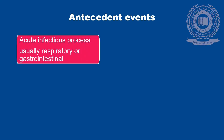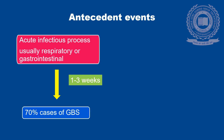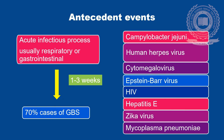Acute infectious process, usually respiratory or gastrointestinal infections after a period of 1 to 3 weeks, is the preceding event that leads to GBS in about 70% of the patients. Other infections that can precipitate Gulenbady Syndrome are Campylobacter jejuni, Human herpes virus infection, Cytomegalovirus, Epstein-Barr virus, HIV virus, Hepatitis E virus, and others.